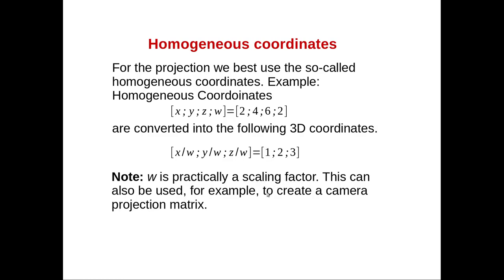This can also be used to create a camera projection matrix. In the projection there is scaling: when an object is further away it appears smaller on our screen, so w takes on the role of the distance from the camera.